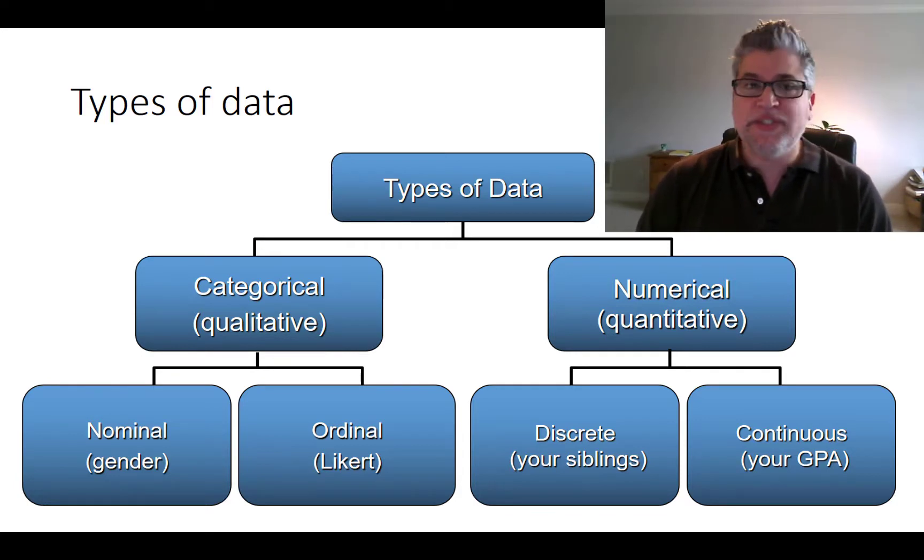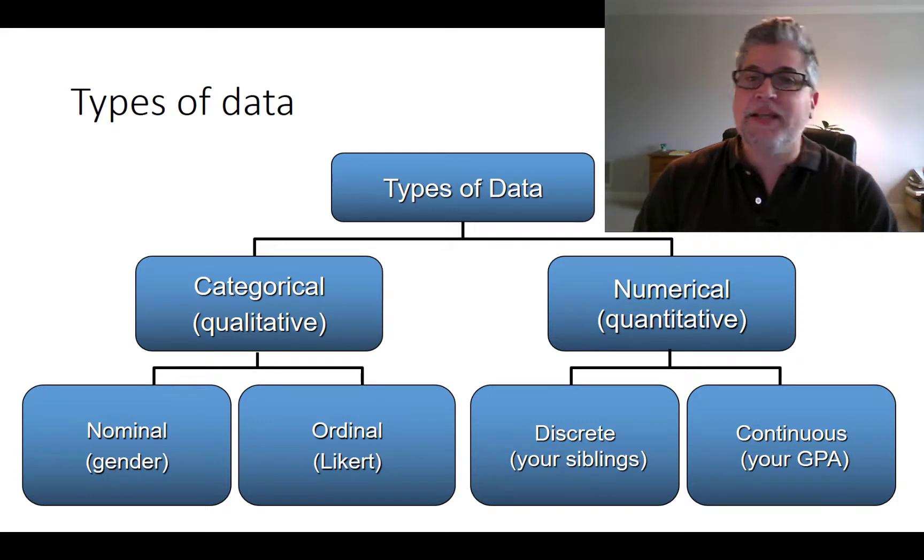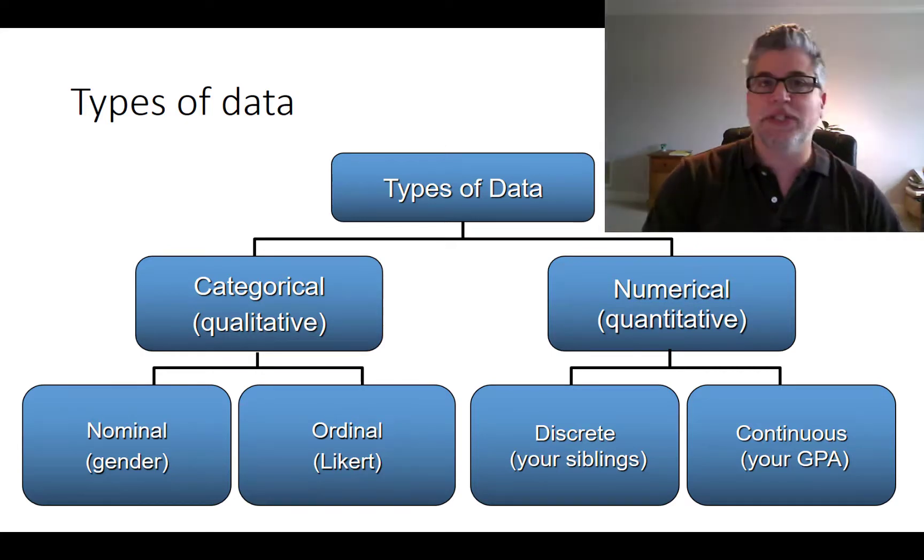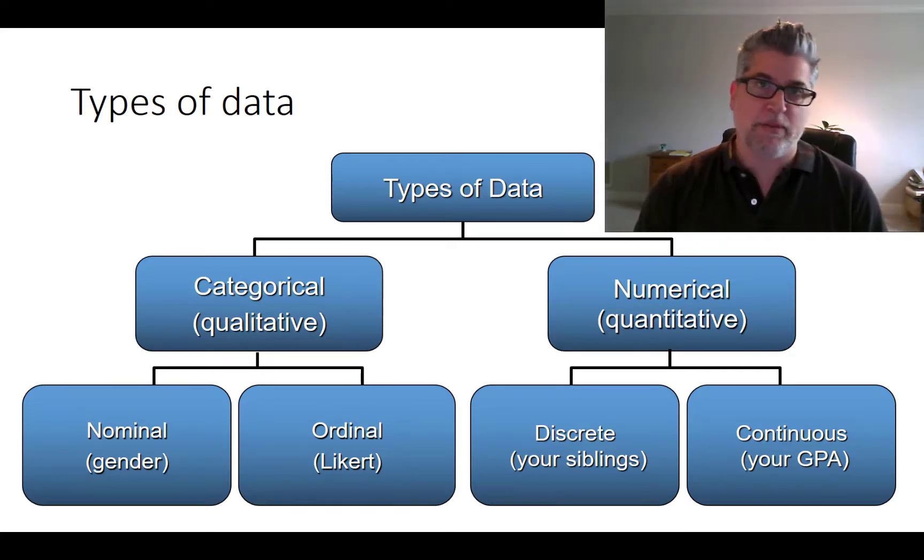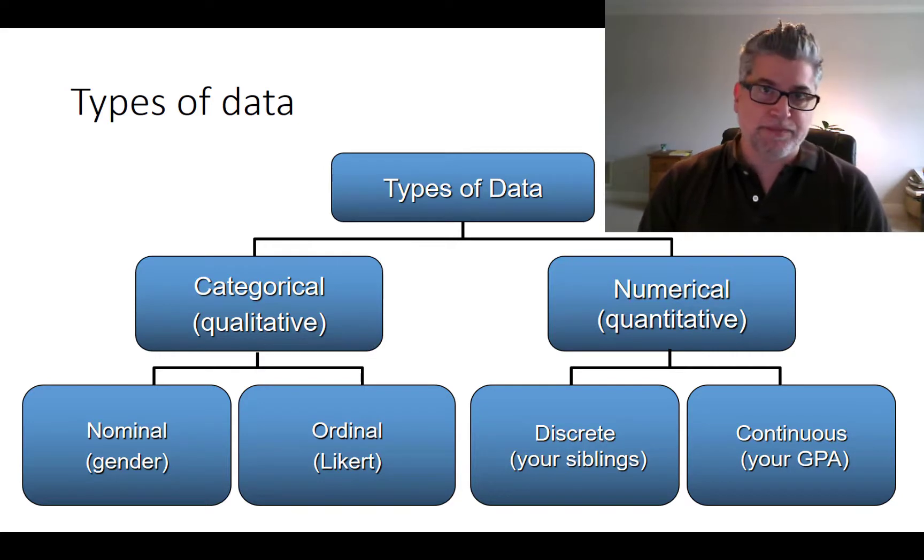Ordinal variables are often analyzed using the tools of numerical variables. That is a mistake, and usually you shouldn't do such a thing. There are statistical techniques focused just on ordinal variables, where if you had measured something as 0, 1, 2, 3, 4, 50, it works out the same as 0, 1, 2, 3, 4, 5, because order matters but not the magnitude.